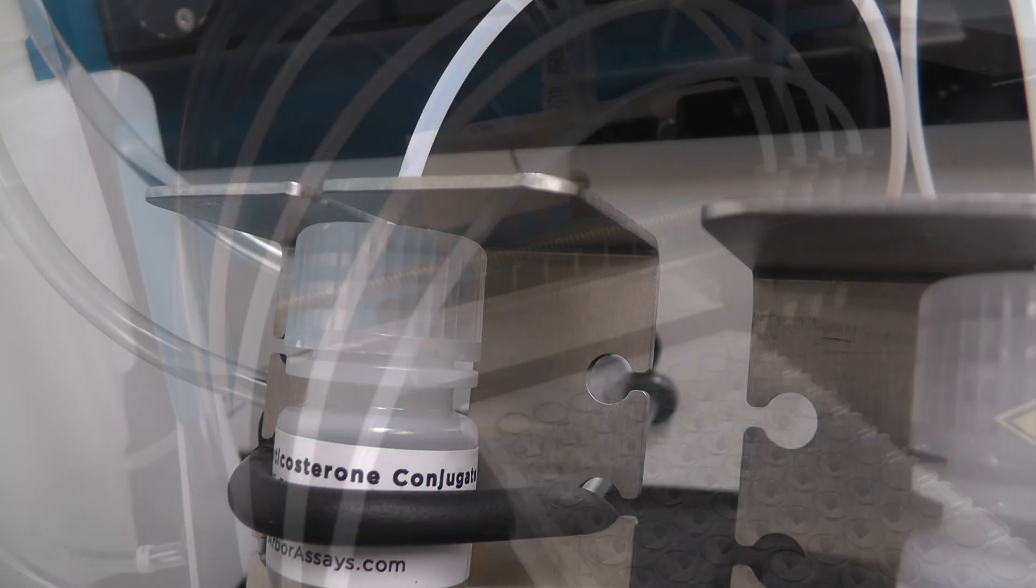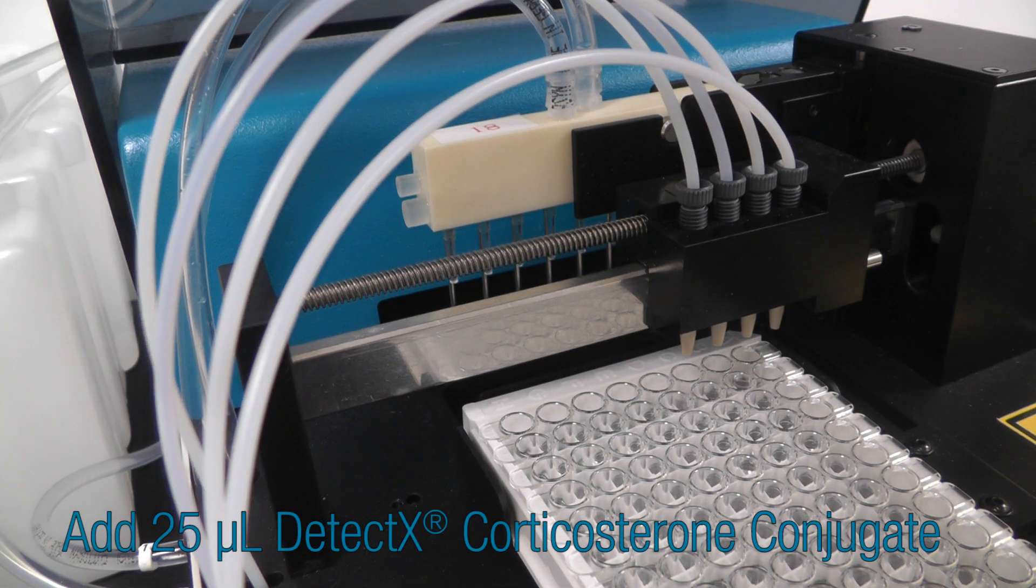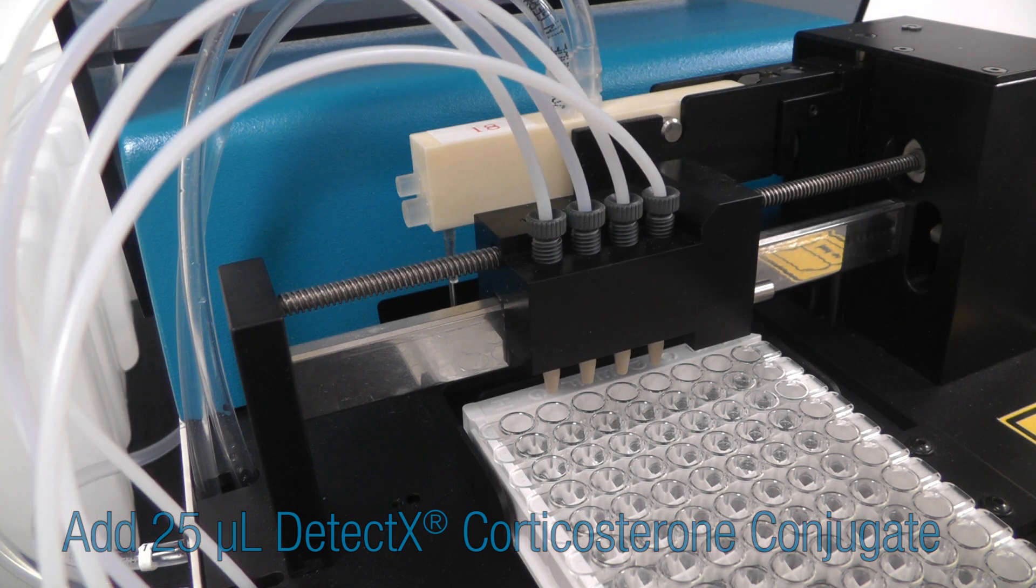Now we click start, and the crocodile begins by dispensing 25 microliters of Corticosterone conjugate to specified wells.